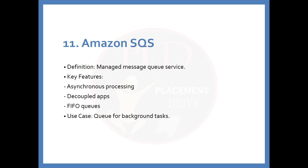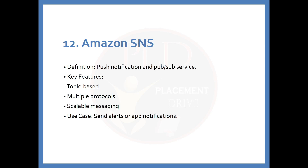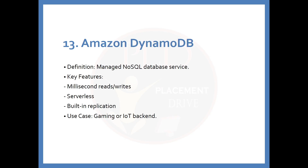The 11th service is Amazon SQS. The definition is: a managed message queue service. Key features include asynchronous processing, decoupled apps, and FIFO (first in, first out) queues. The use case is queuing for background tasks. The 12th service is Amazon SNS. The definition is: a push notification and pub/sub service. Key features include topic-based messaging, multiple protocols, and scalable messaging. The use case is sending alerts or app notifications.